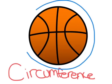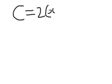So to find the circumference of this basketball, we would measure this line. To figure out the circumference, you have to figure out the formula. To find the circumference, the formula is 2 times pi times r.